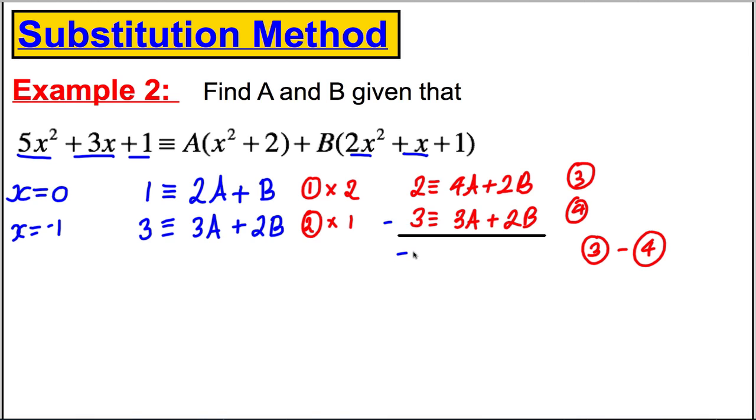2 take away 3 is -1, 4A take away 3A is just 1A, and these would disappear. So A is -1, and substituting back in here, therefore, let's substitute back into this one here. I would have 1 is equal to -2 plus B, so therefore, B must be equal to 3. So I have found that A is equal to -1, and B is equal to 3. And I have found that A and that B as I was required.